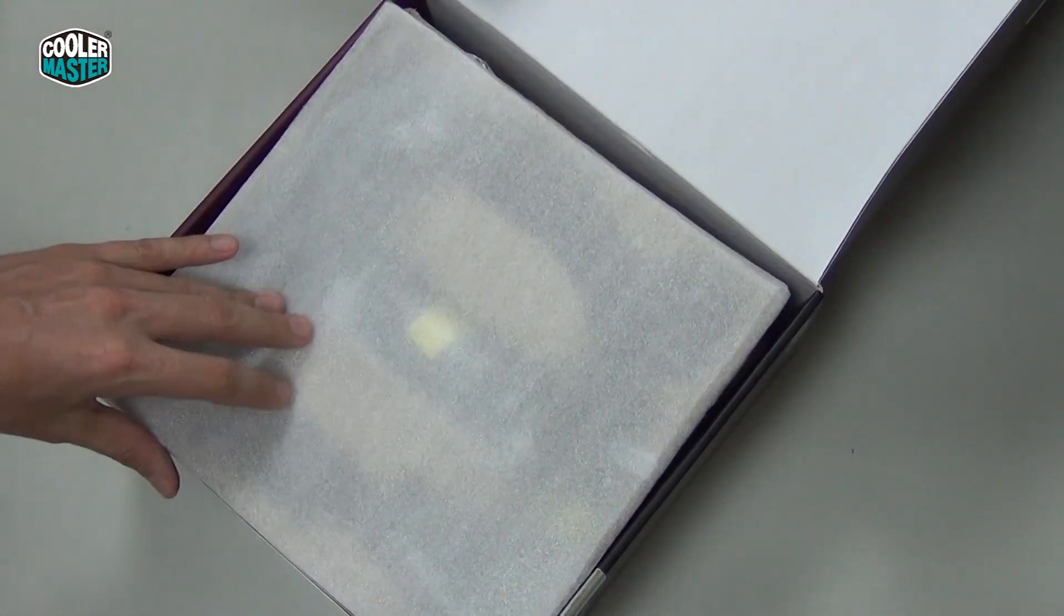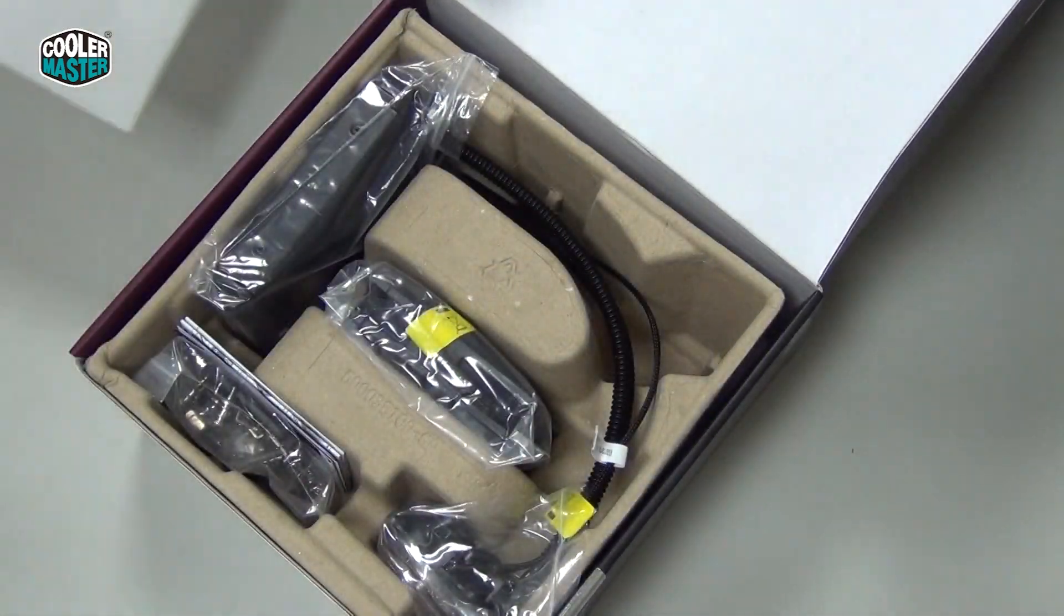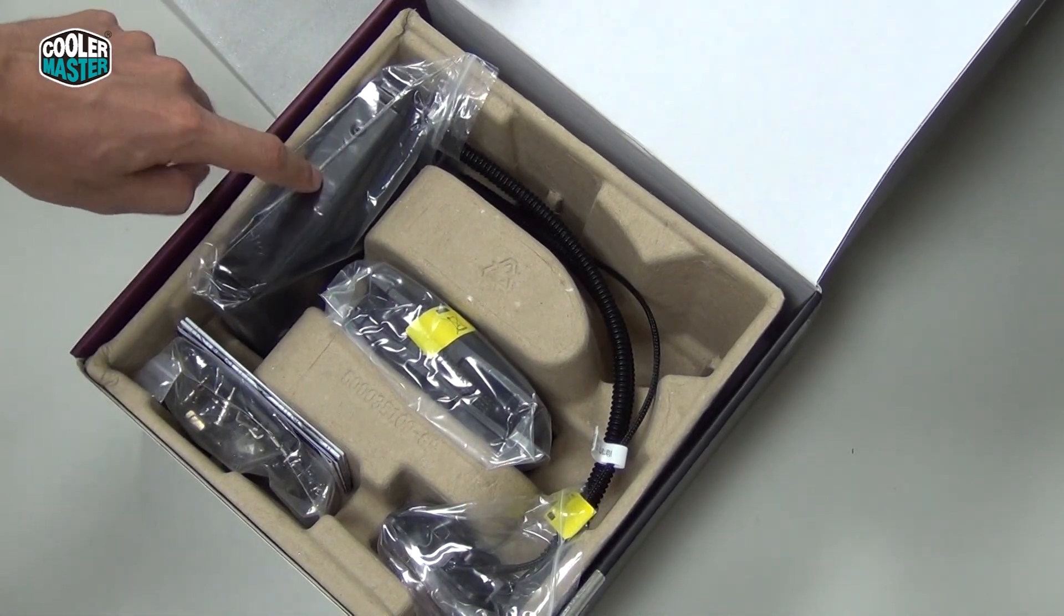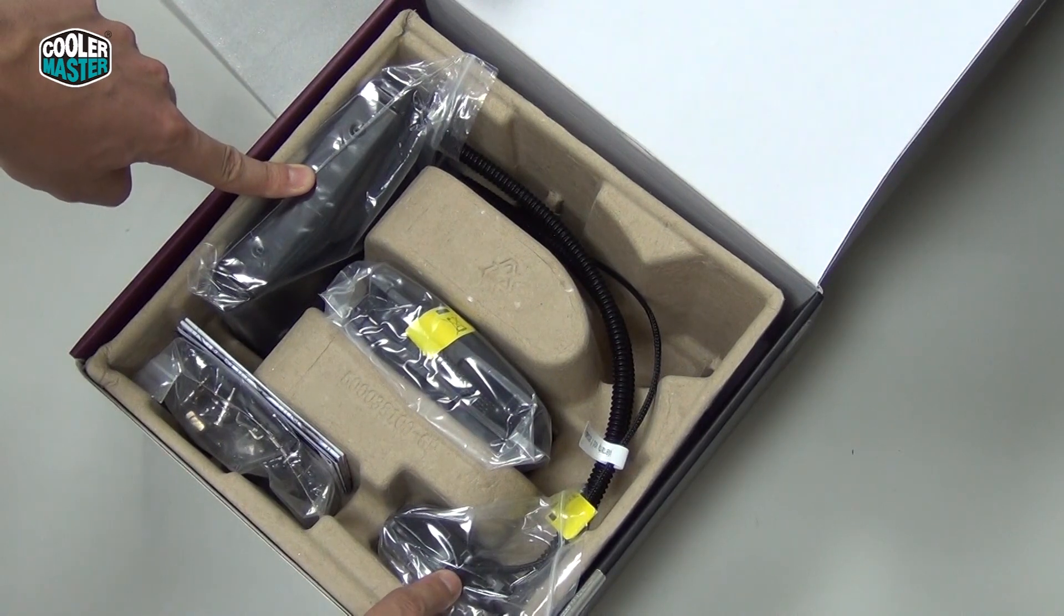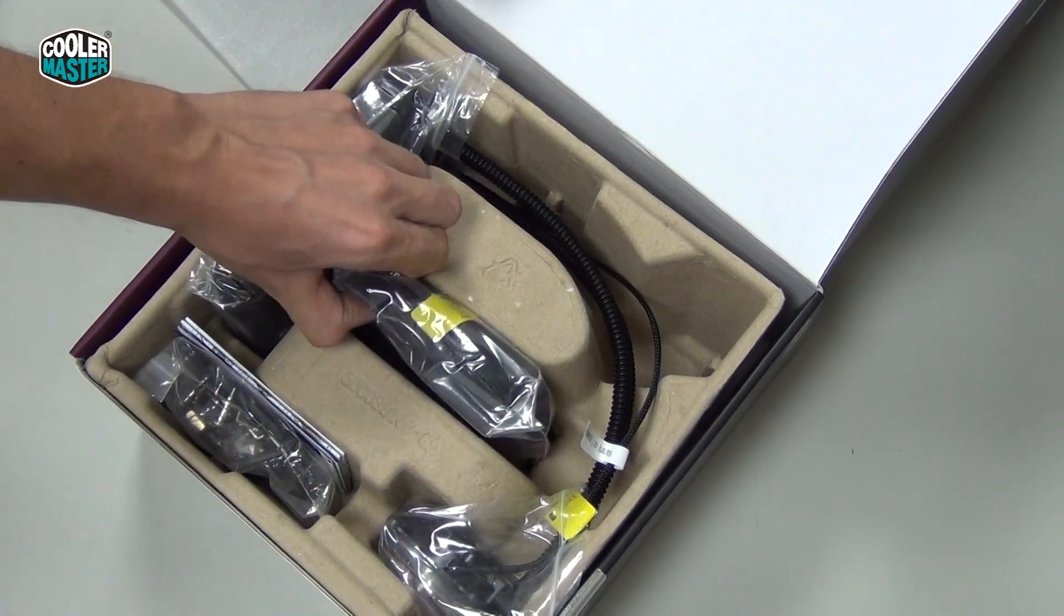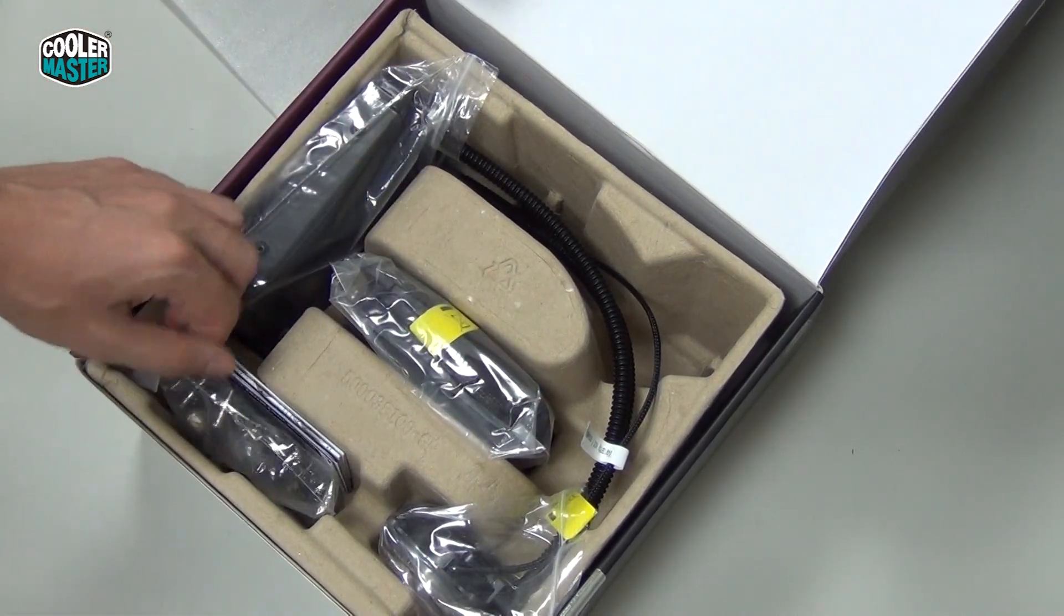Alright, here we go. You can see inside the box we have the radiator right here, connected with the tubing to the water block and pump assembly here. Here we have the fan, and here we have the mounting kit and the manual.